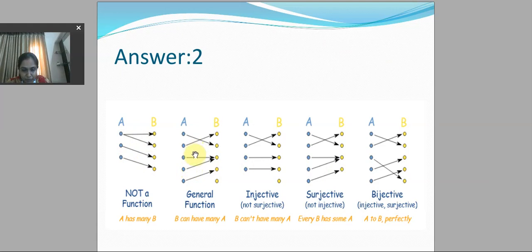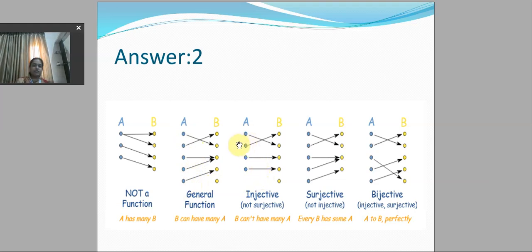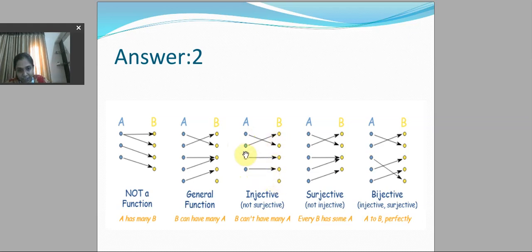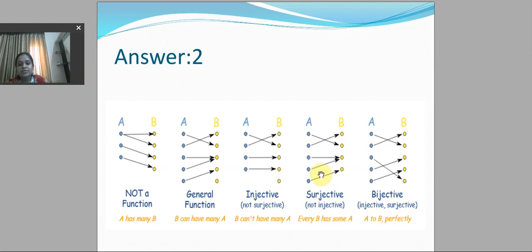In example two, it is a function because every element has a single image. It is an injective function because every element of x has a different image in y, so it is one-to-one. It is not onto because the last element of set B does not have any pre-image in A. For the surjective example, every element of set B has a pre-image in set A. However, the third and fourth elements have the same image in B, so it is not one-to-one.